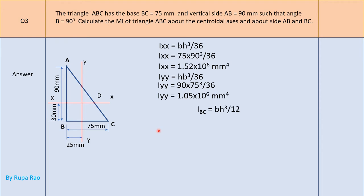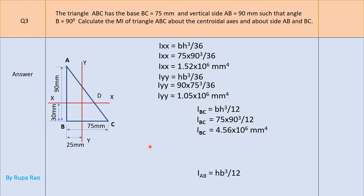Now for moment of inertia about side BC (the base), the formula is BH³/12. Substituting B = 75 and H = 90: 75 × 90³ / 12. On the calculator: 75 × 90, press X³, divided by 12, equals — you get I_BC = 4.56 × 10⁶ mm⁴.